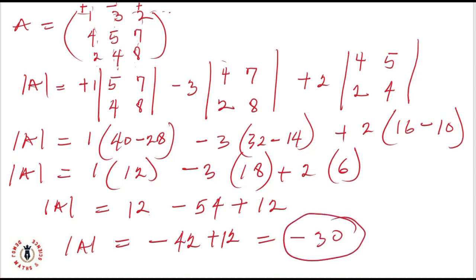So the determinant of this 3 by 3 matrix is given as minus 30. With this, I hope you know how to work with matrices and determinants, especially when it comes to 2 by 2 and 3 by 3 matrices. In case you have questions, please do not hesitate to use our comment section. Thank you for staying with us and see you in our next class.